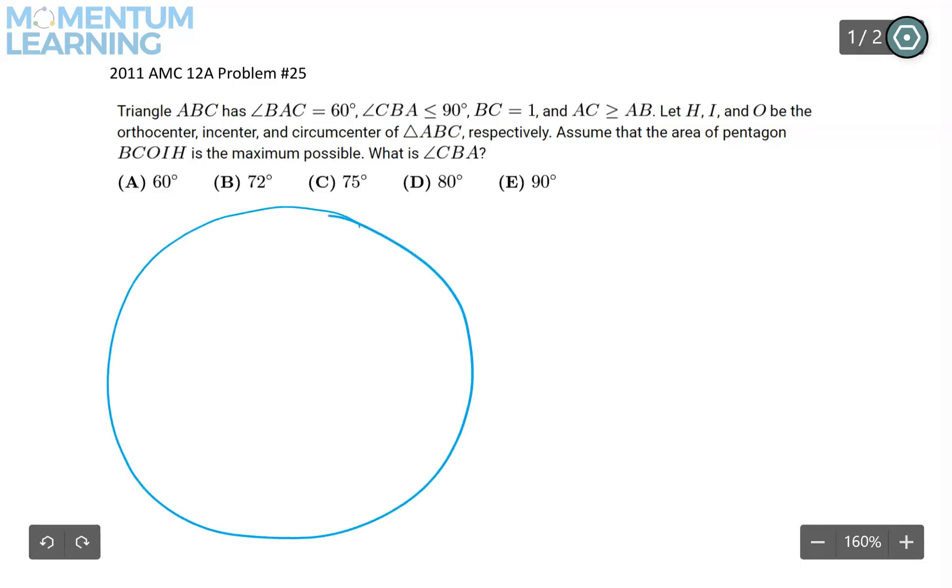I'm just going to start with the circumcircle. This is traditional. I think it's a good practice to draw the circumcircle of a triangle to begin with. So we are told that this angle is a 60 degree angle and angle B is less than 90. We don't know angle C. We know that BC is 1, measures 1 unit.